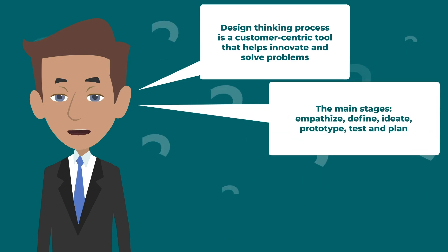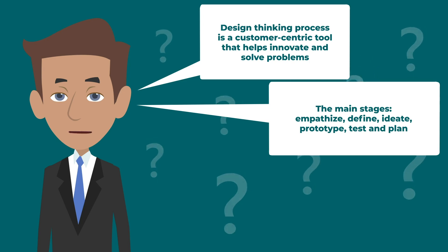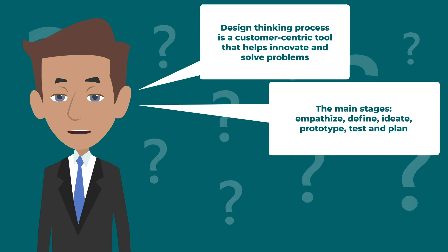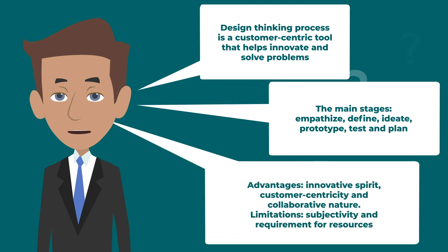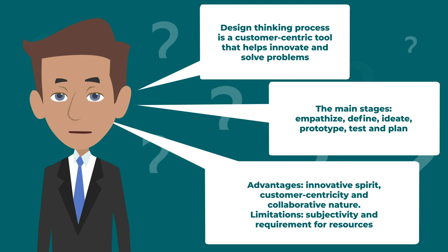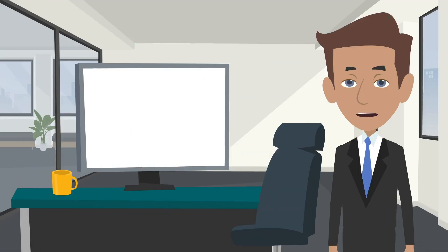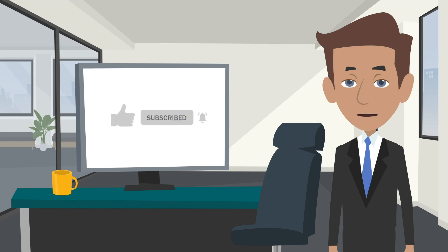The main stages of the process include empathize, define, ideate, prototype, test, and plan. Advantages of the model include innovative spirit, customer-centricity, and collaborative nature. Among limitations, we can distinguish subjectivity and requirement for resources, especially time. And that's all in today's adventure. Don't forget to smash that like button and subscribe to the channel for more knowledge. Until next time, this is your friendly guide signing off. See you in the next episodes of Adventures with Questus Marketing Knowledge.